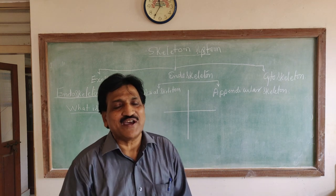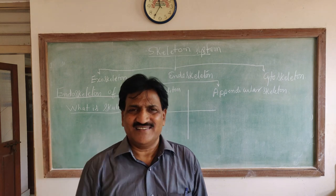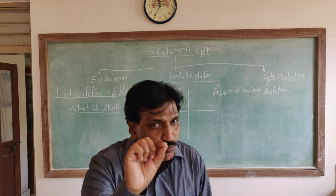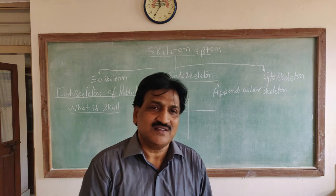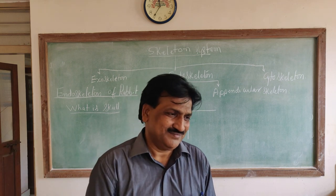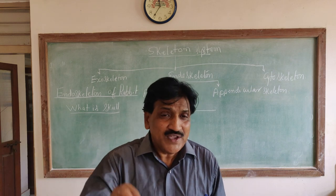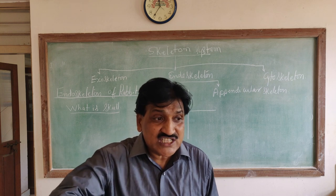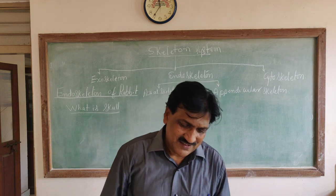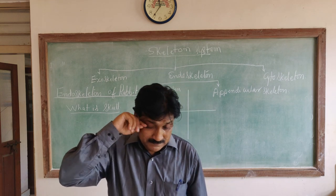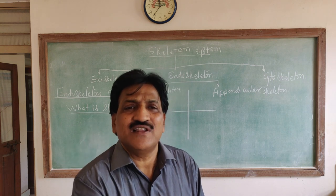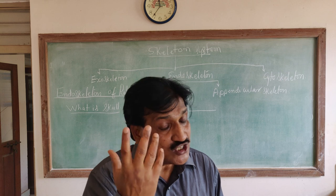Certain bones are missing in the rabbit skull, for example the post-orbital, prefrontal, quadrato-jugal, and parasphenoid. The quadrate in case of mammals is incorporated and forms ear ossicles — the malleus, stapes, and incus. These bones are derived from the quadrate. Additionally, in the rabbit, the maxilla is spongy in nature.